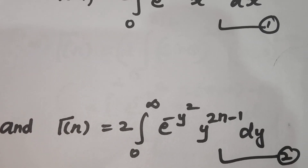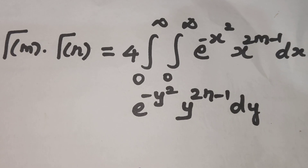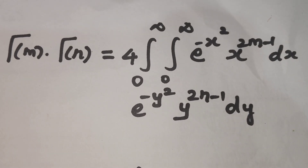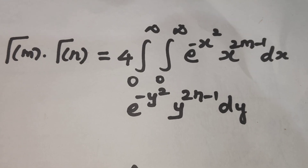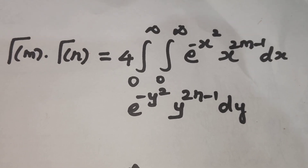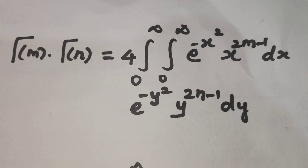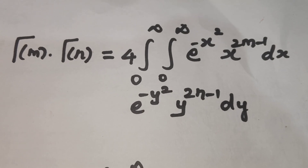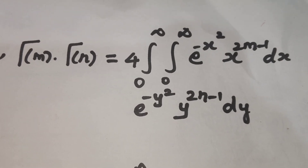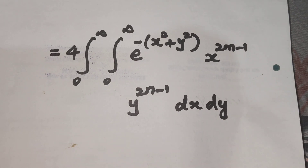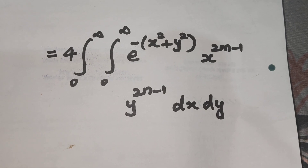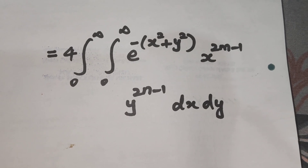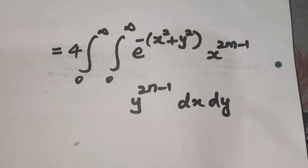Multiplying these two equations, we get gamma of m into gamma of n is equal to 4 times the double integral from 0 to infinity of e power minus x square, x power 2m minus 1 dx, into e power minus y square, y power 2n minus 1 dy. That equals 4 times double integral of e power minus (x square plus y square), x power 2m minus 1, y power 2n minus 1, dx dy.